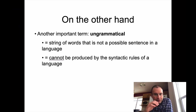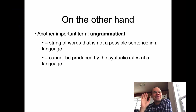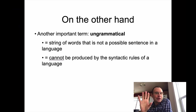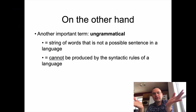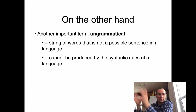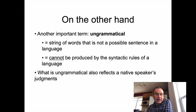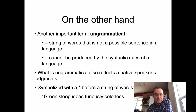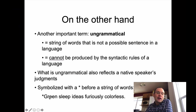The other important term: 'ungrammatical' means a string of words that is not a possible sentence in a language. We infer that you cannot produce ungrammatical strings with the syntactic rules of a language. The syntactic rules give us a certain set of possible sentences, and rule out another set we cannot say. When we get something that's ungrammatical, we put a little asterisk or star in front of it. So *'green sleep ideas furiously colorless' is ungrammatical — you would not say this in any circumstance.